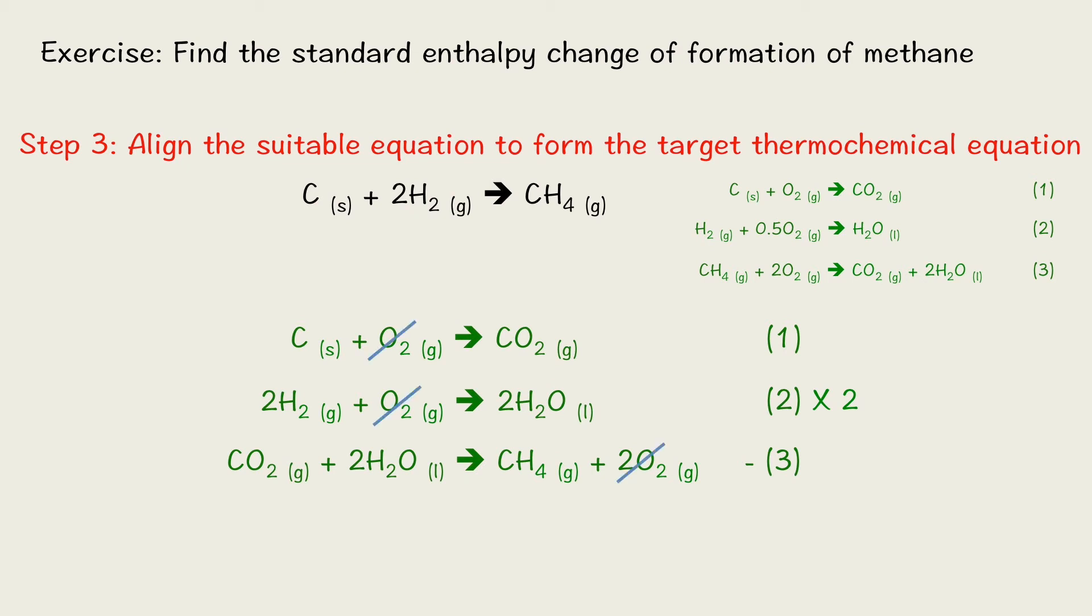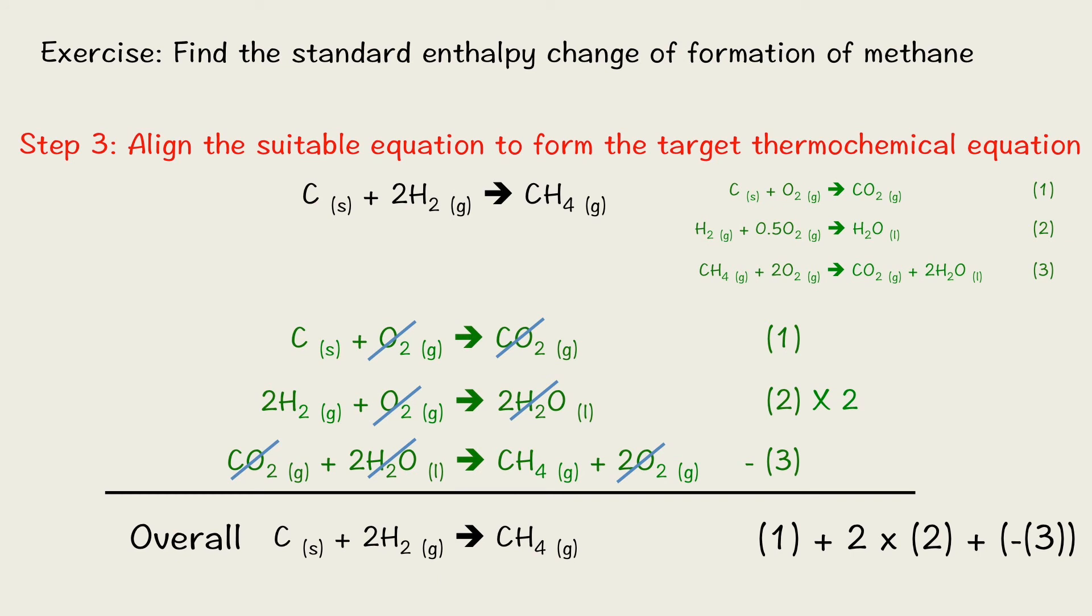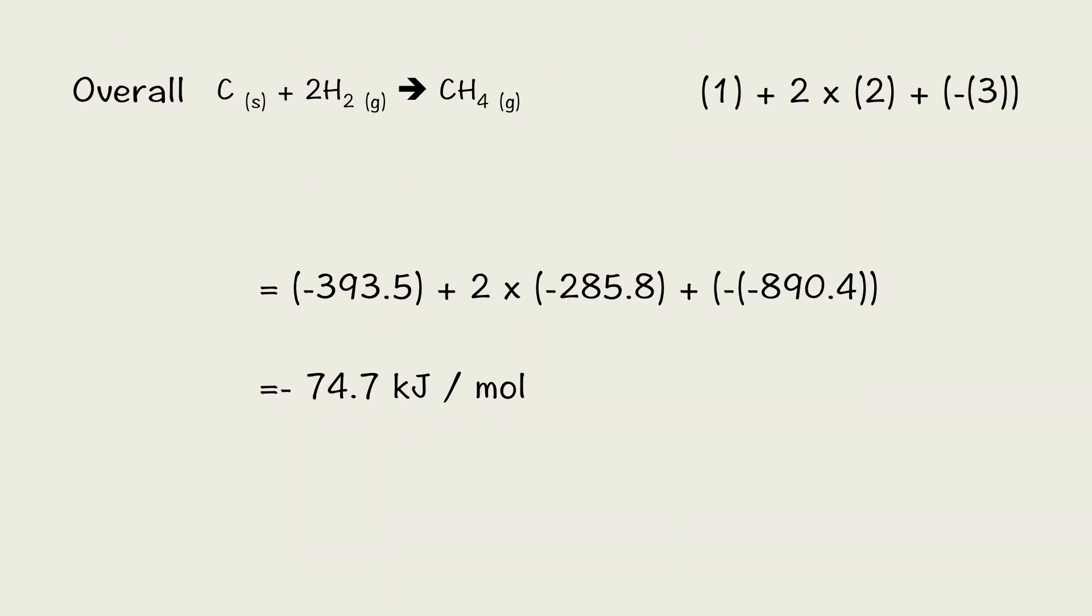Next, we try to cross out the duplicate one. For example, we cross out the oxygen gas. Then we cross out the CO2. And finally, we cross out two water molecules. You can check whether the overall equation is what we want. On the right hand side, you can see the overall equation should be equation one plus two equation two plus a minus equation three. We can input the data or input the value to get the answer is minus 74.7 KJ per mole.